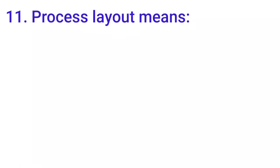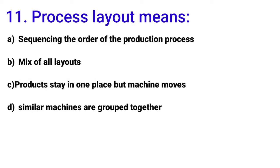Eleventh MCQ: 'Process layout means.' We already know plant layout is the arrangement of machines. There are multiple types of plant layout. Option A describes sequencing the order of the production process — that is product layout, where machines are arranged in a linear sequence matching the production process.